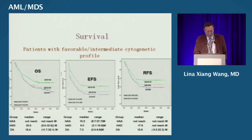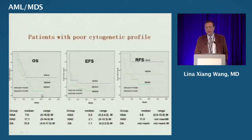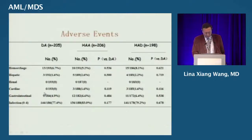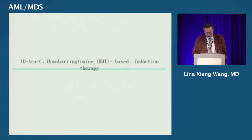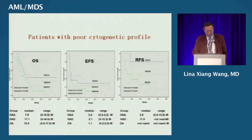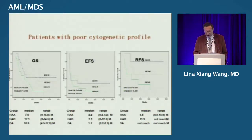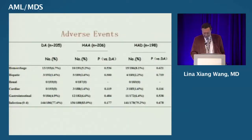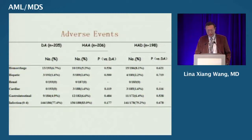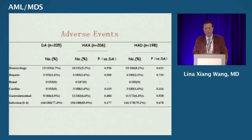When patients were divided by cytogenetic risk categories, for overall survival, event-free survival, and relapse-free survival, the HA regimen was significantly higher than DA, while HA and HAD were not significantly different. For high-risk patients, the three regimens showed no significant difference, though patient numbers were very limited and data not fully consolidated. Regarding adverse events, there was no significant difference in myelosuppression, and non-hematologic toxicities including hepatic, cardiac, and gastrointestinal effects were also not significantly different among the three regimens.